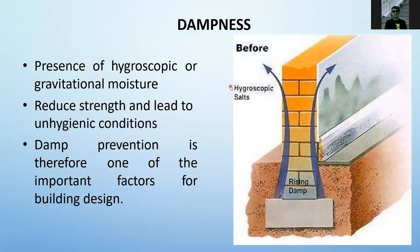Now we go to dampproofing, or dampness. Dampness is the presence of hygroscopic or gravitational moisture, where moisture penetrates through the bottom or top and seeps through the wall. You can see the water penetration on different areas — not exactly on the area where water is penetrating. Damp prevention is therefore one of the important factors in building design, as water may rise and be seen on the lower part of the house.